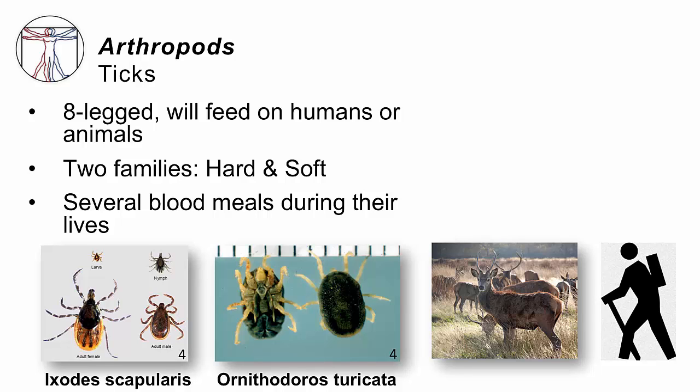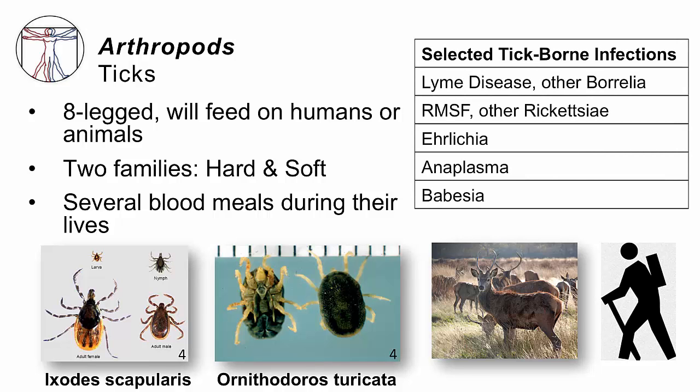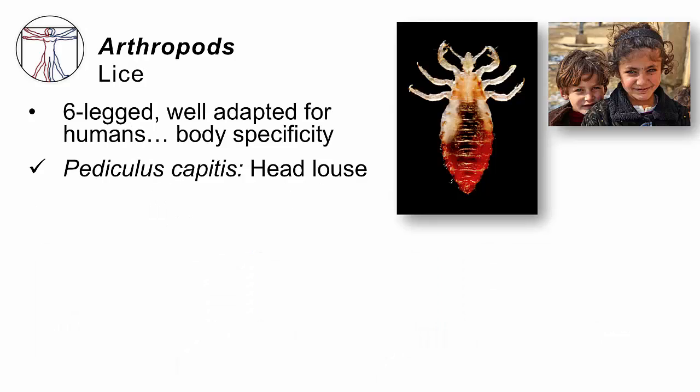Ticks take several blood meals during their lives. They have exoskeletons, so they have to grow and then molt that skeleton. Each time they do, they go through a new phase. With a hard tick like Ixodes, they start as a larva, then a nymph, then become an adult, needing blood in their belly to nourish each transition. They're a problem because they can spread infection. Although Lyme disease is the most celebrated tick-borne infection in the USA, there are others including other Borrelial species, Rocky Mountain Spotted Fever, other Rickettsiae, Ehrlichia, Anaplasma, and Babesia.